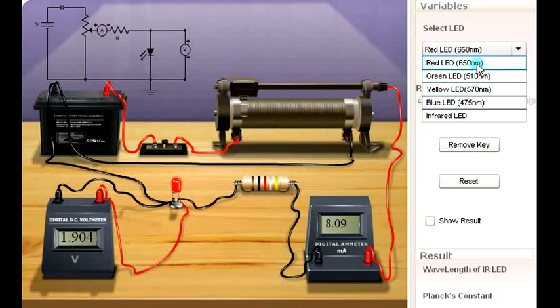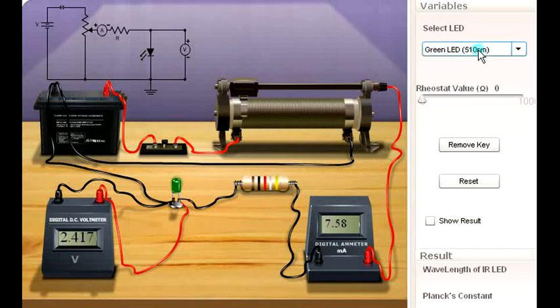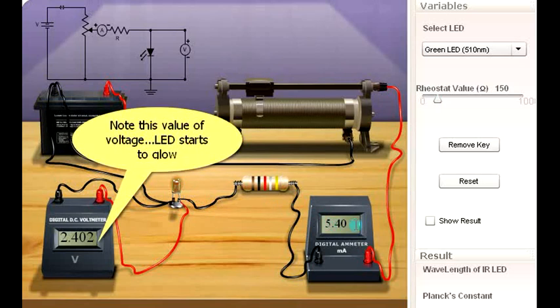There are four LEDs which we have to consider in this experiment. I have just used this 650 nanometer wavelength for the red color. Now I will use this green one with 510 nanometer wavelength. Keep the resistance high at 830 ohm. I will decrease it, reducing the potential. There is no change into the display. The potential across this LED is of the order of 2.389. Now I will decrease it slowly to check the value at which the current flows into the LED. The LED starts to glow and the current is 5.40 and voltage is 2.402. Note down both values.